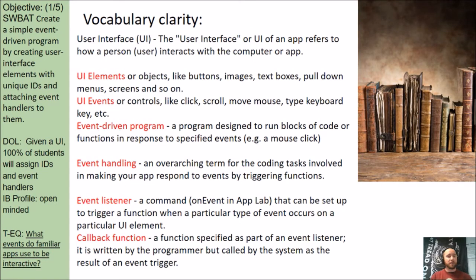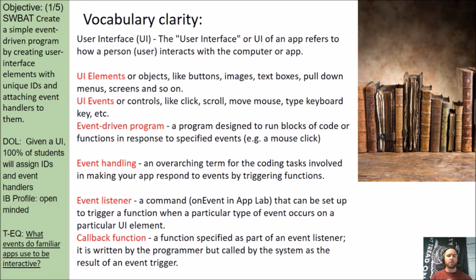Before moving further, here's some vocabulary clarity. A user interface, also known as UI, refers to how a person — the user — interacts with a computer or an app. UI elements or objects include things like buttons, images, and text boxes. UI events are controls like clicking, scrolling, or moving a mouse. An event-driven program is designed to run blocks of code or functions in response to a specific event. Event handling is an overarching term for the coding tasks involved in making your app respond to events triggered by the functions.